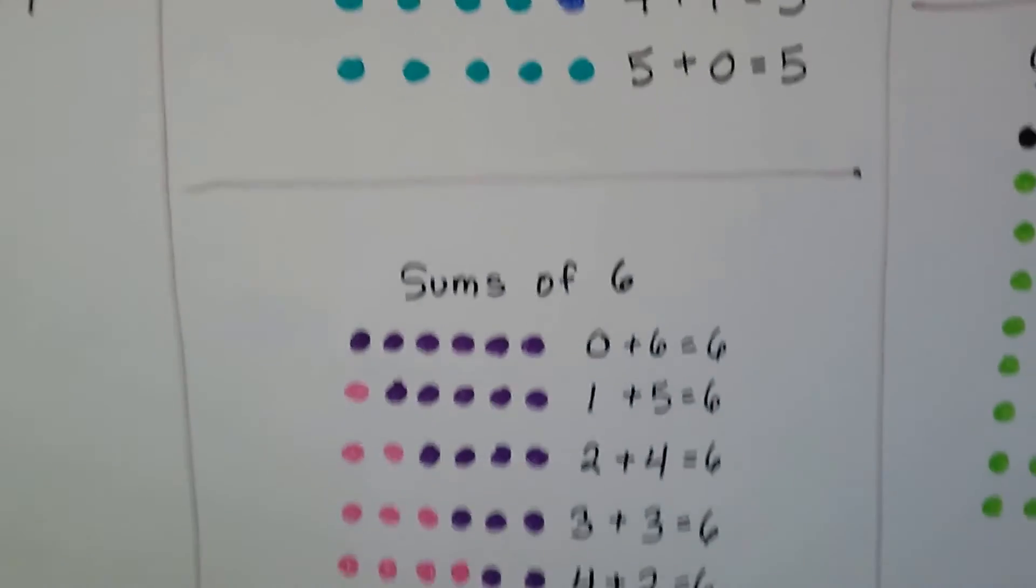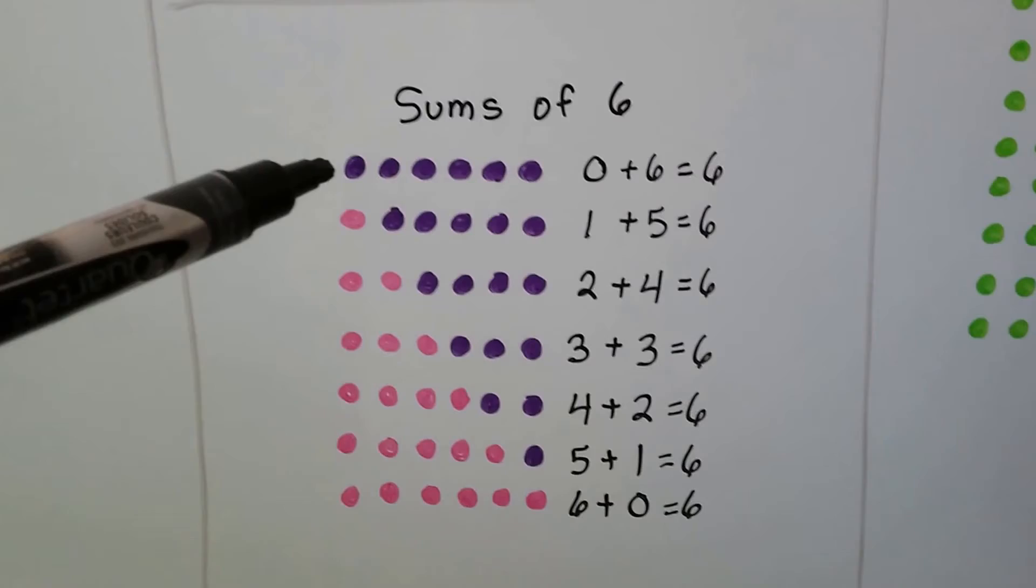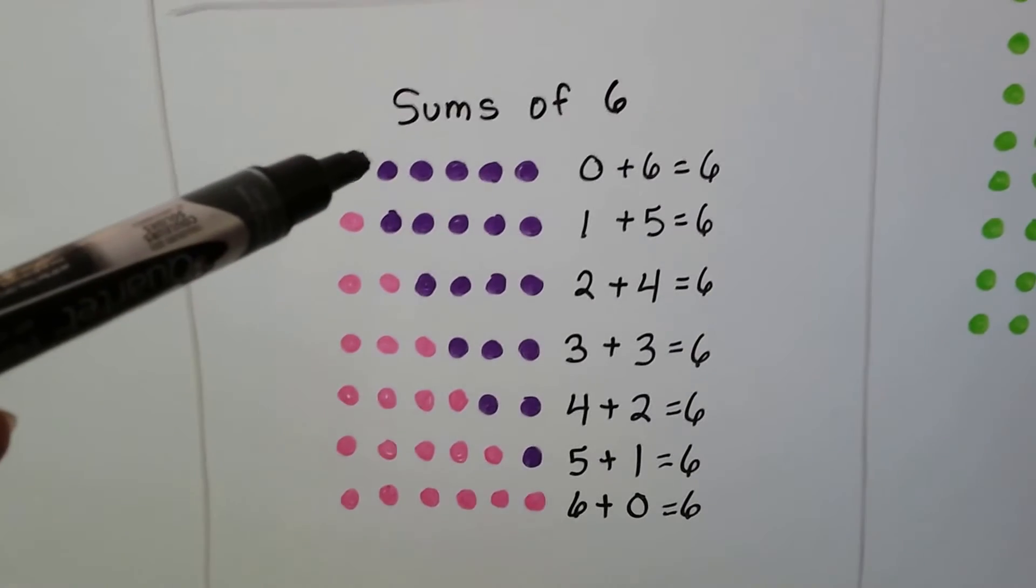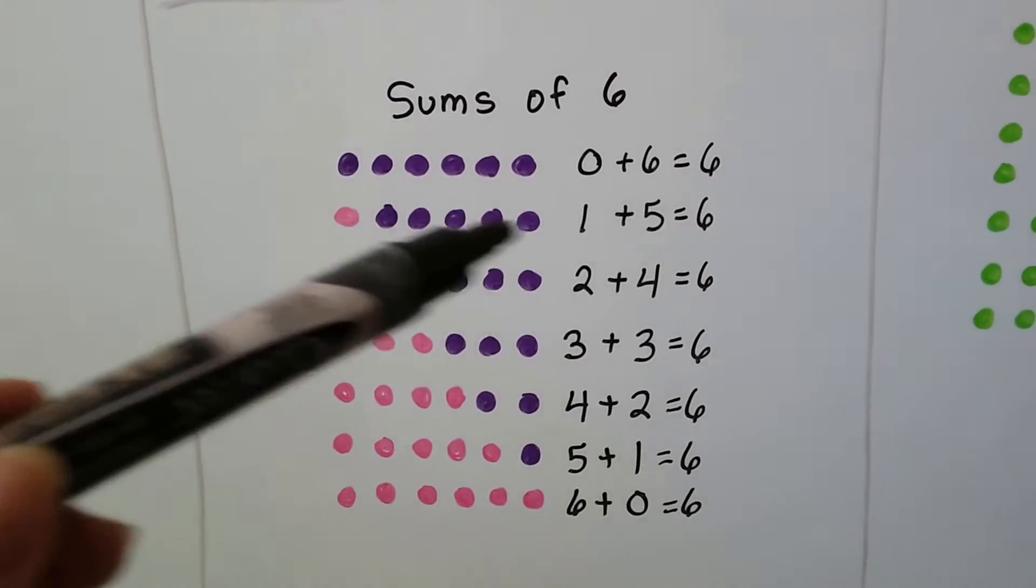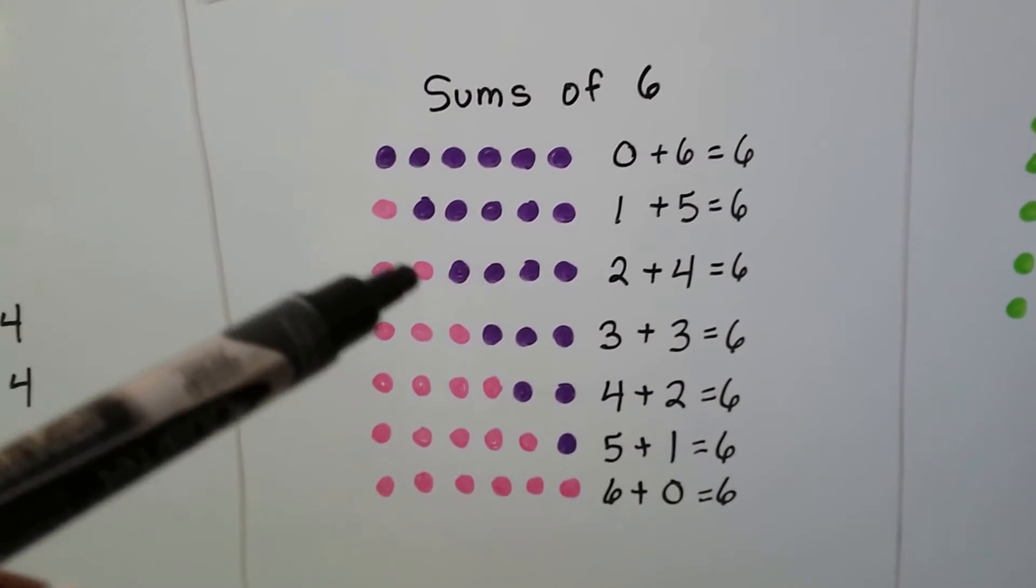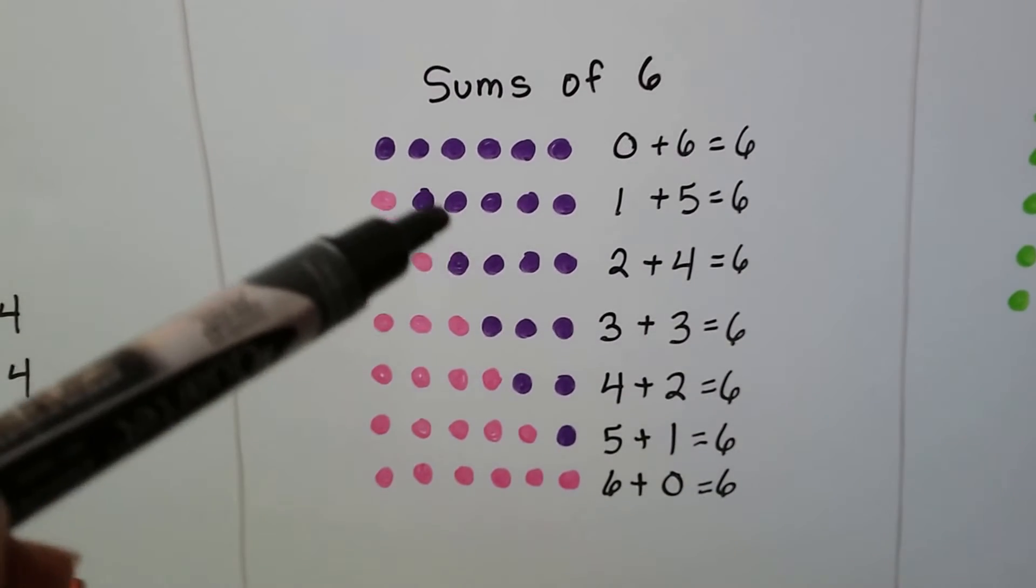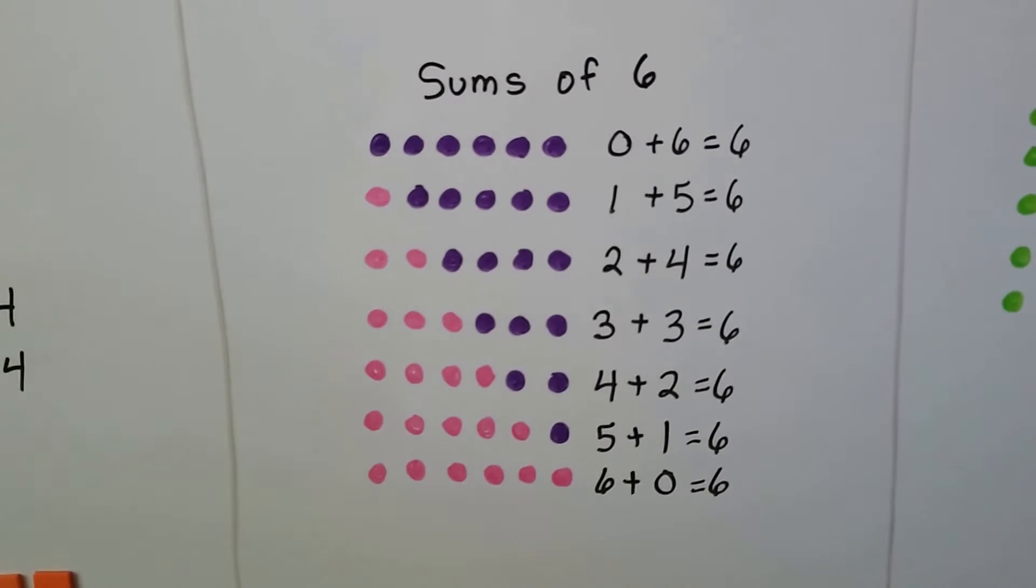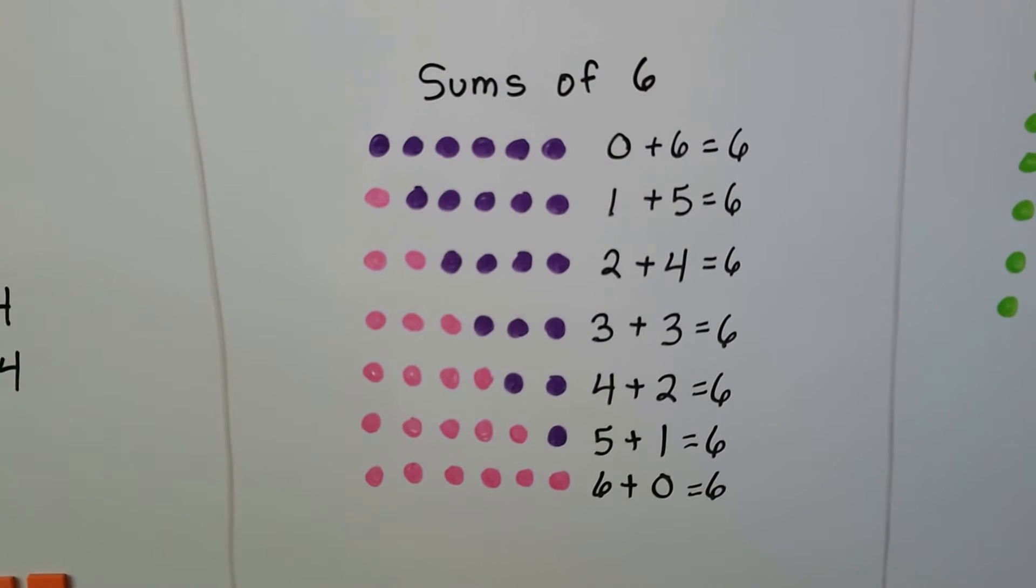Same thing with the sums of six. We can have six purple ones and no pink ones. Or we could have one pink one and five purple ones. And as the number of pink ones increase, the number of purple ones decrease and go down. See?